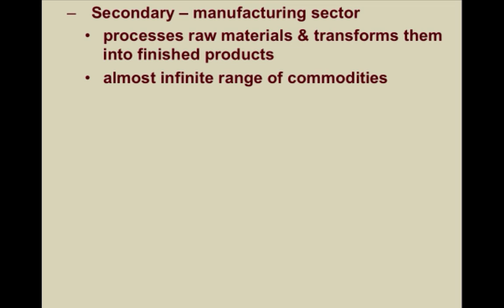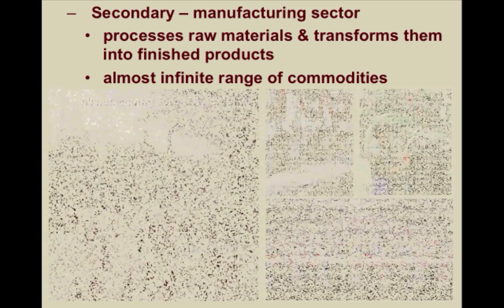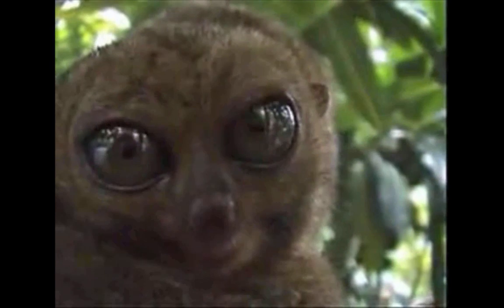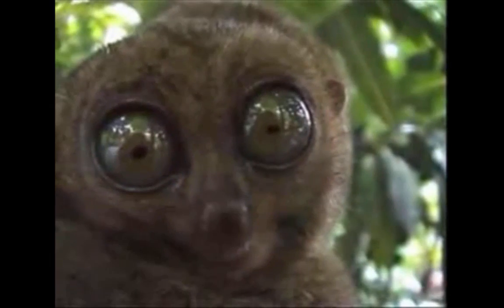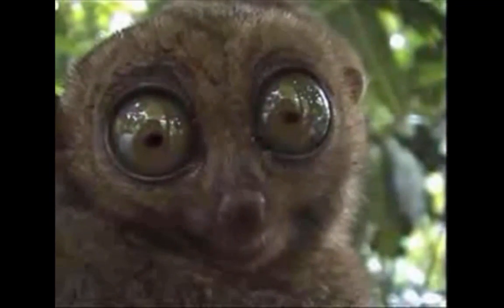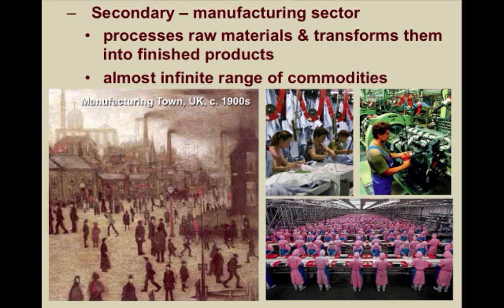There's almost an infinite range of commodities, ranging from the production of toys, chemicals, buildings, phones, shoes, and so on. Just look at the room around you — it is almost impossible to find something in that room that is not mass produced, or made by things that are mass produced.